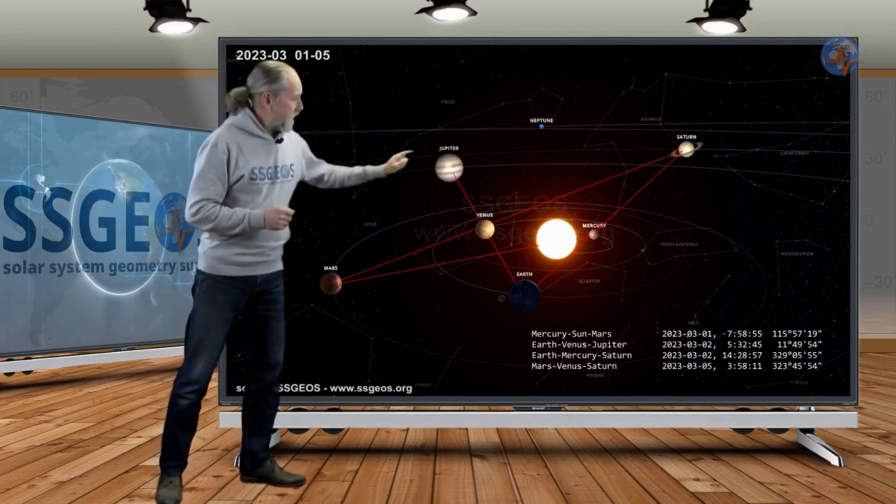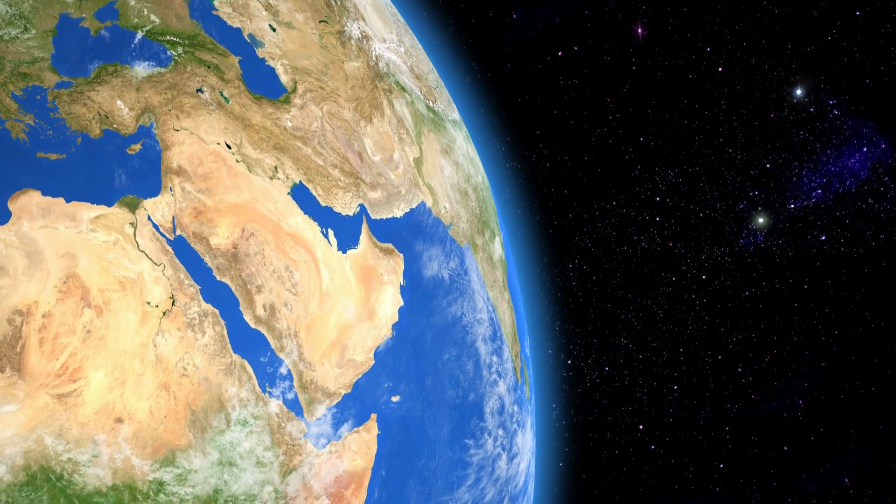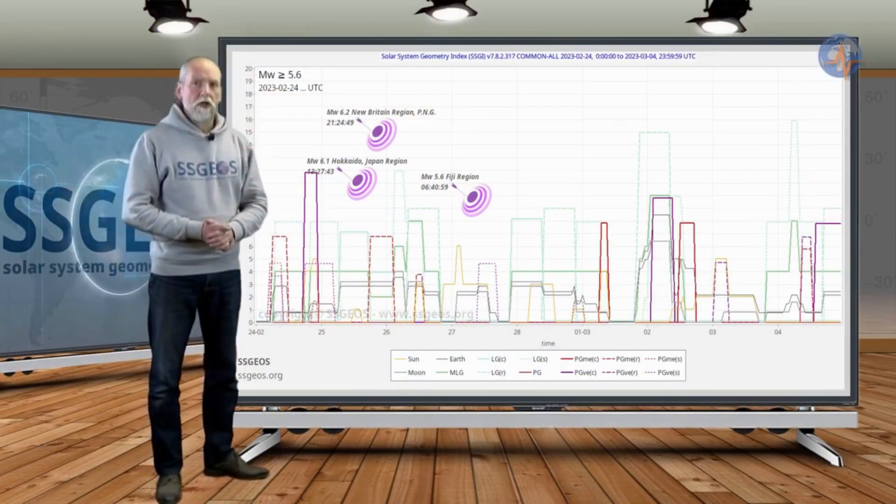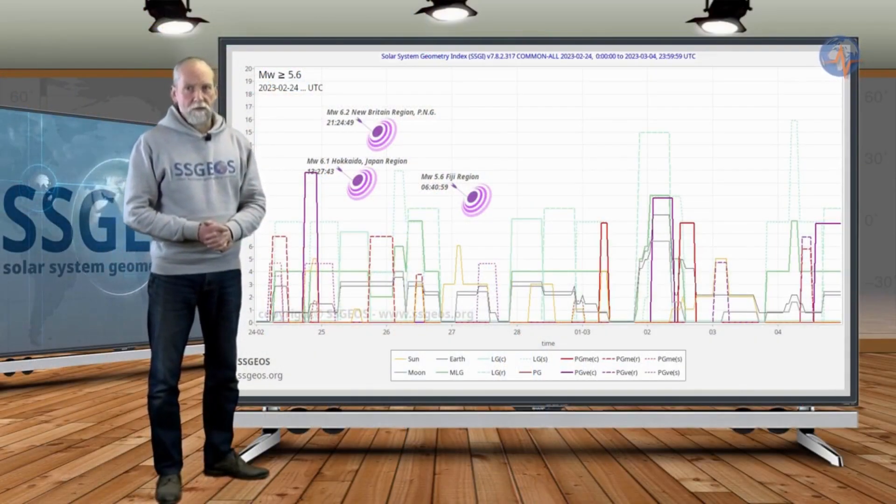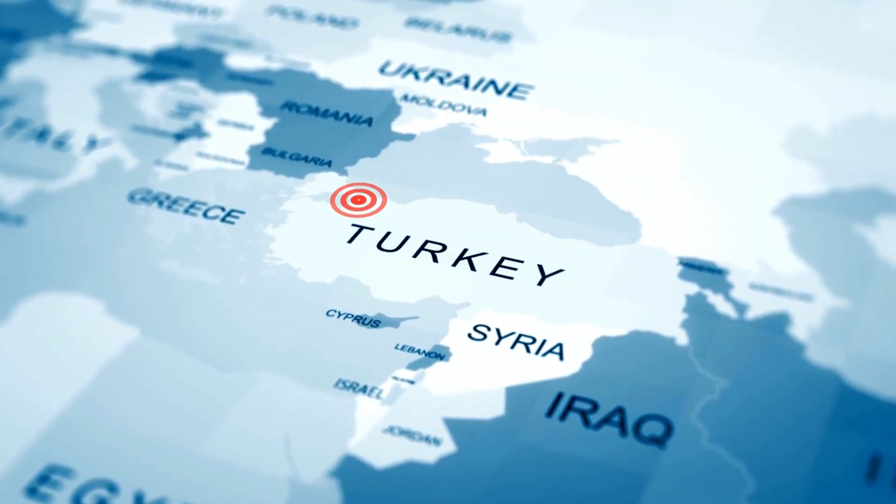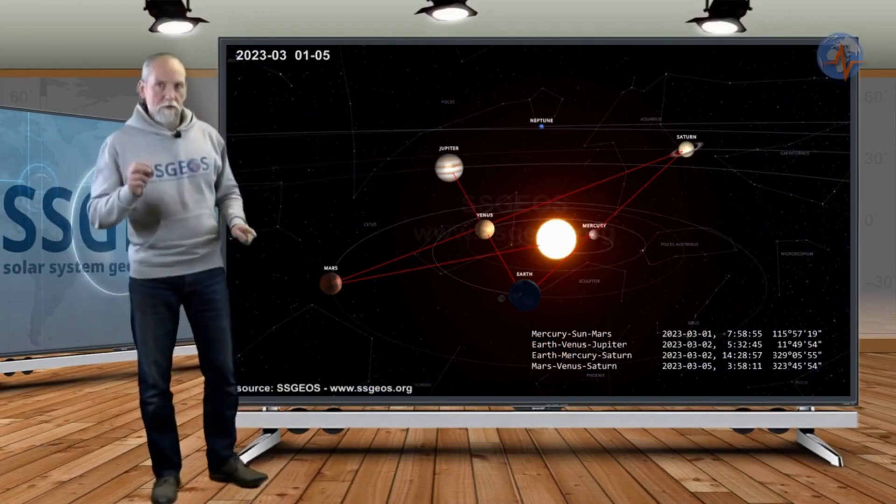Two researchers predict the date of the next earthquake in the Middle East. Dutch researcher and seismologist Frank Hoogerbeets and Iraqi geologist Soleh Mohammed Award warned about an upcoming earthquake in the fifth week of March, more exactly on March 8th.